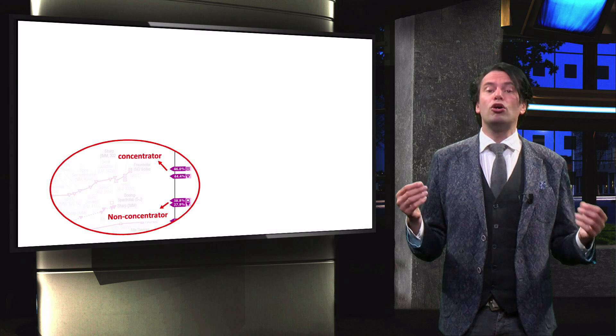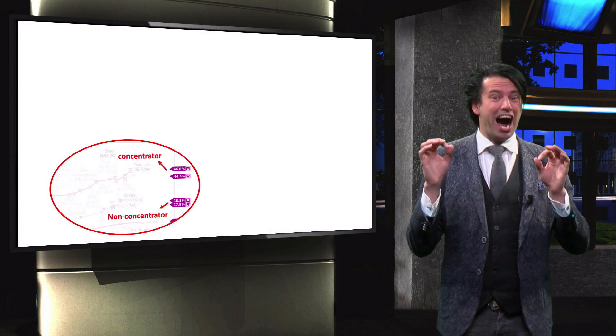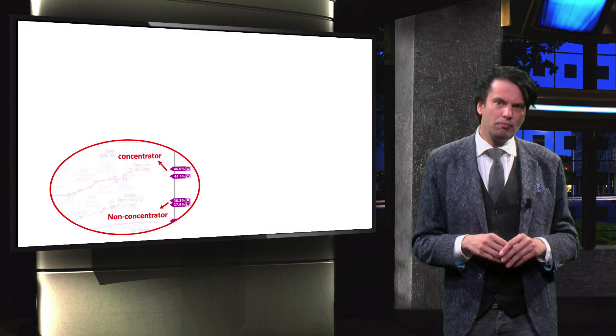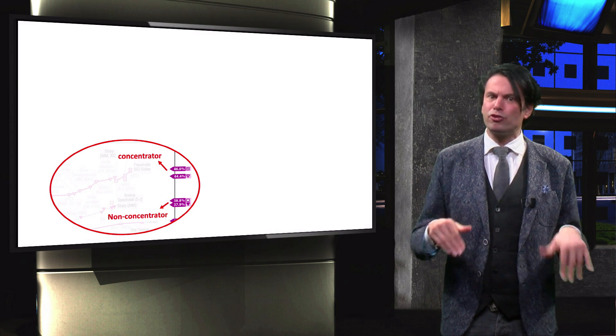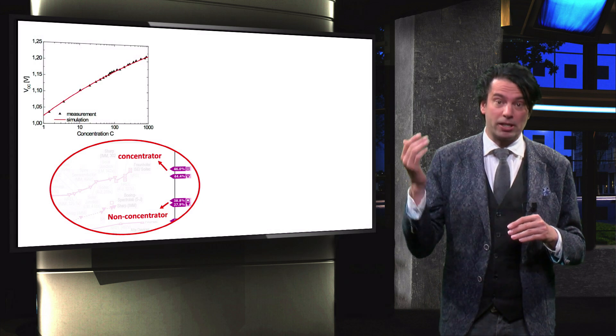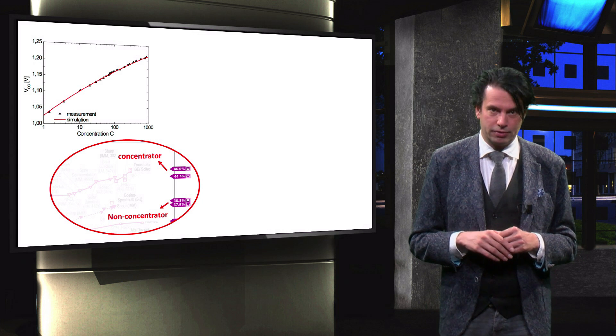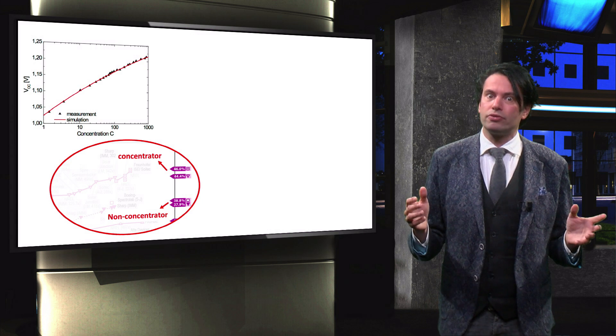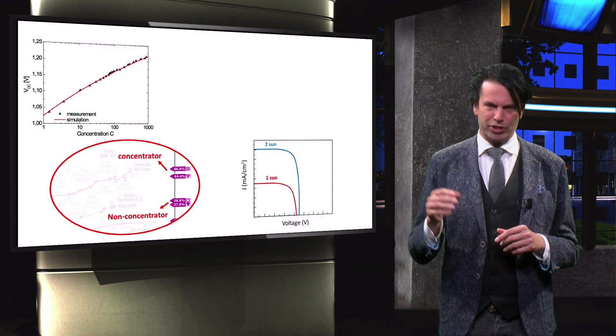In summary, we saw that solar cells can have a higher conversion efficiency under concentrated light conditions. We found that the JSC increases proportionally with increasing irradiance and the VOC increases logarithmically with irradiance. Therefore, under moderate light concentration conditions, the solar cell performance increases.